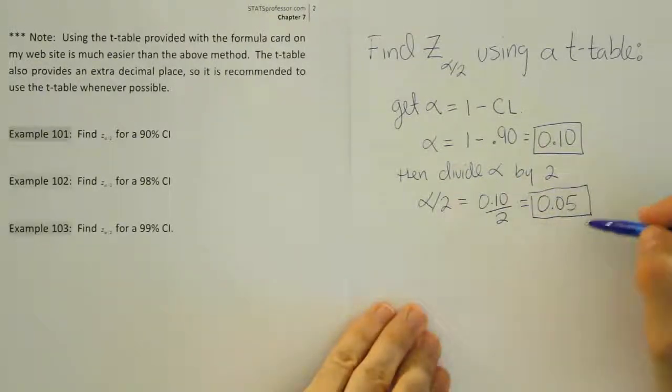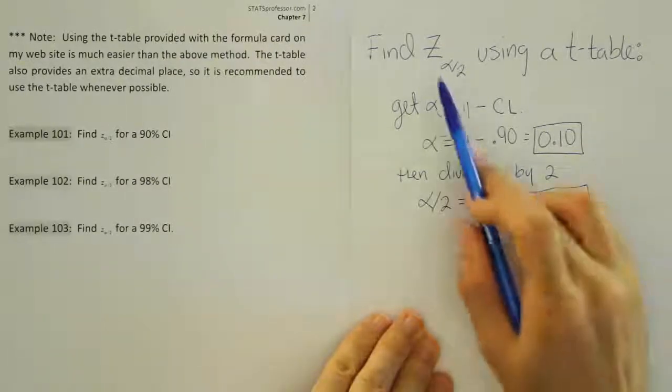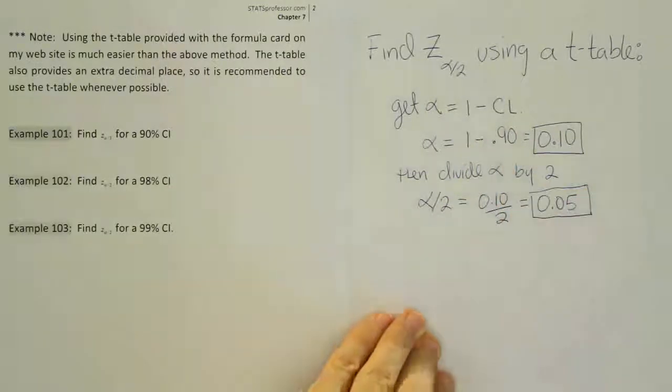All right, so finally, we're going to look this value up. So look this up on the t-table in the appropriate column that corresponds to 5%. Go straight to the bottom where the z-scores are located, and you will find your critical z alpha divided by 2 value. So let's go to our t-table and see how that's done.